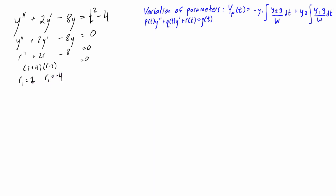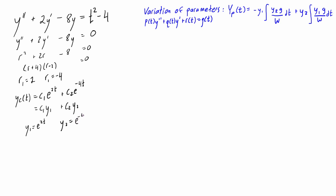Because we have real distinct roots, the general solution to the homogeneous equation — which is also the complementary solution to the original differential equation — is c1·e^(2t) + c2·e^(-4t). This is the same as c1·y1 + c2·y2, where y1 and y2 are a fundamental set of solutions. The important thing here is that y1 = e^(2t) and y2 = e^(-4t).